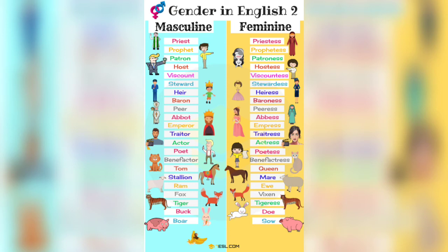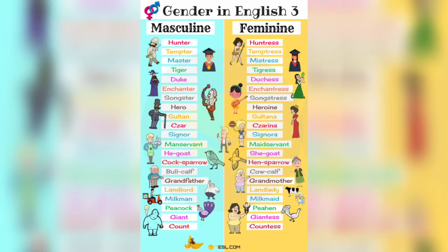For example, emperor is like a king and empress is like a queen. A priest is the male person performing worship in a temple; the female serving God is a priestess. Similarly, monk and nun — there are various examples to help understand masculine and feminine.